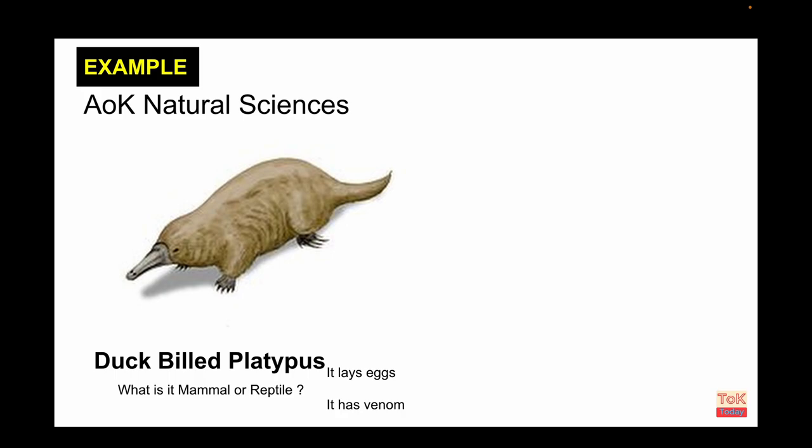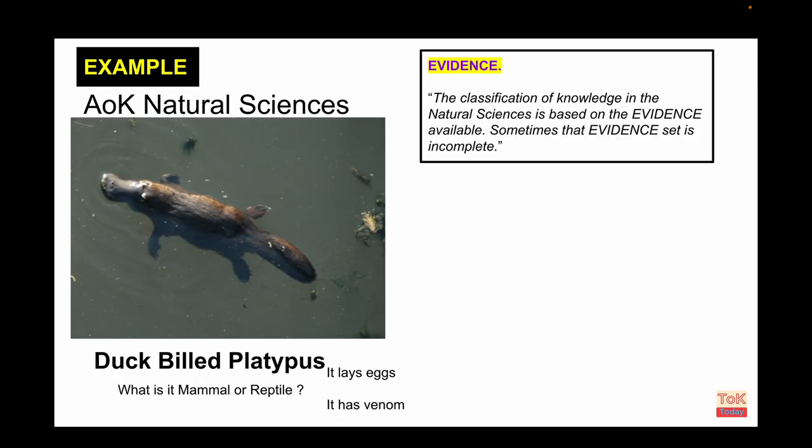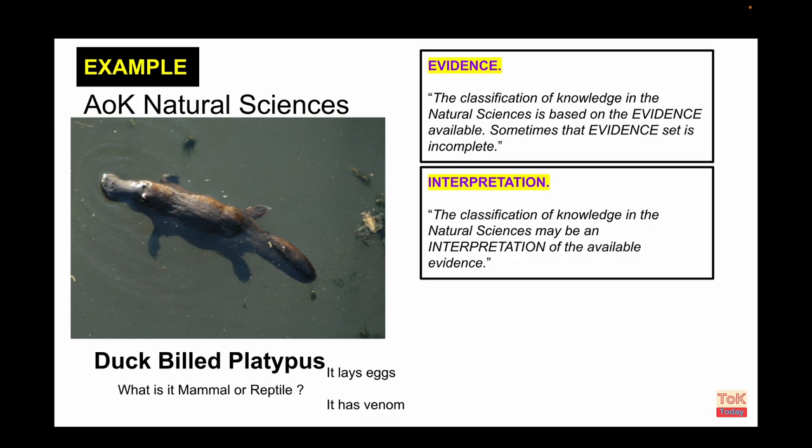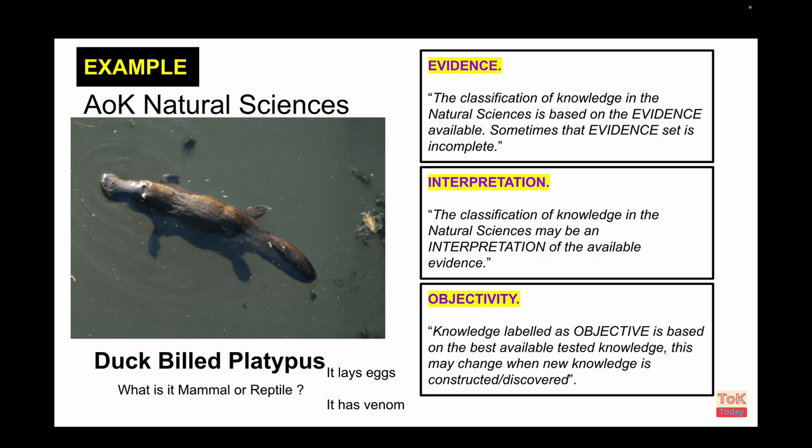The issue with the platypus is that it didn't neatly fit into the taxonomy of life used by European scientists in the 19th century. When they sent the first platypus specimen from Australia to the Natural History Museum in London, the esteemed scientists thought it must be a hoax. And I've applied the concepts of evidence, interpretation and objectivity to that example. I won't read through my examples because that's awfully tedious.